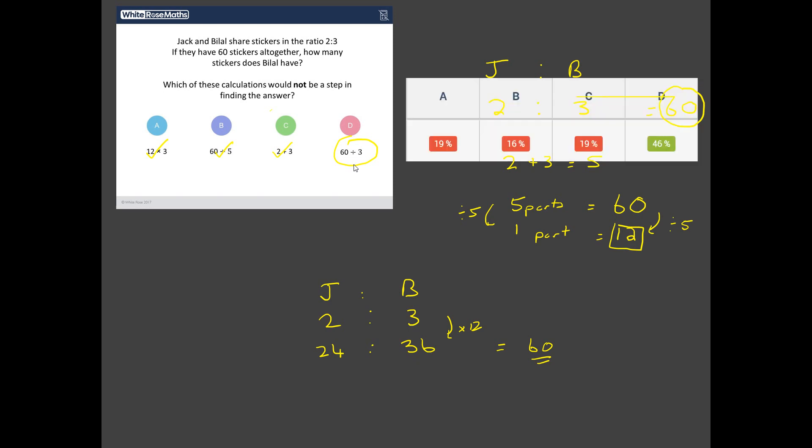Phew, yep, we've got it right. That is good news there. But look at this here. Only 46% of students also agree with us that that's the correct answer. There's loads of students who've got each of these wrong. We've got A, 19% of students think that 2 times 3 doesn't come into play. And C, 19% of students think 2 plus 3 doesn't come into play. Why don't students think that?